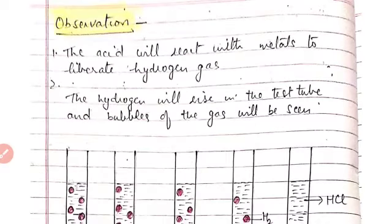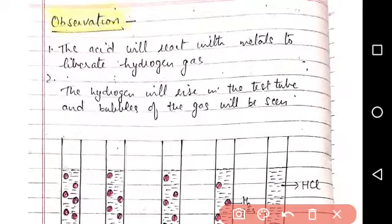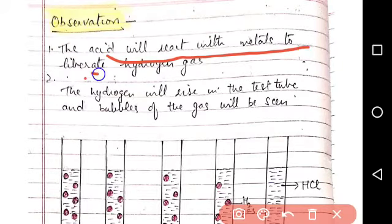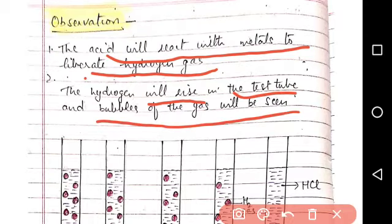So what are the observations? We will see the acid will react with metals to liberate hydrogen gas. And how is the hydrogen gas seen? In the form of bubbles arising from each test tube. The hydrogen will rise in the test tube and bubbles of gas will be seen.